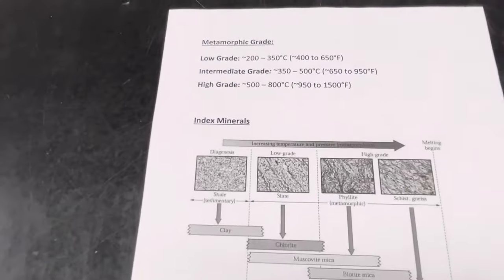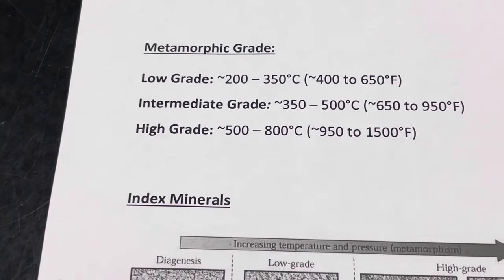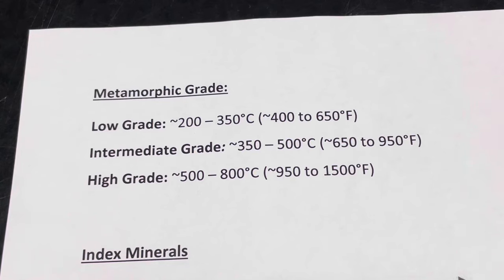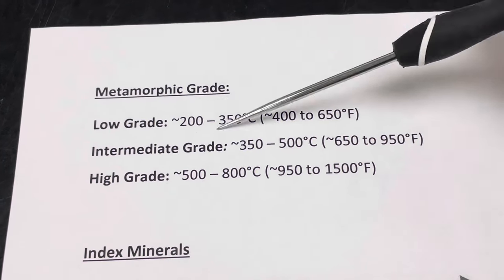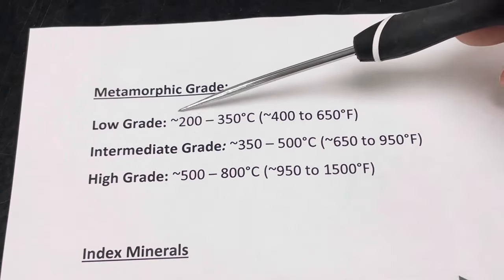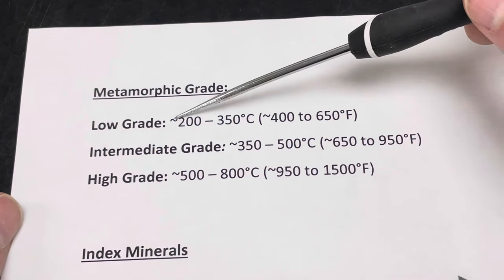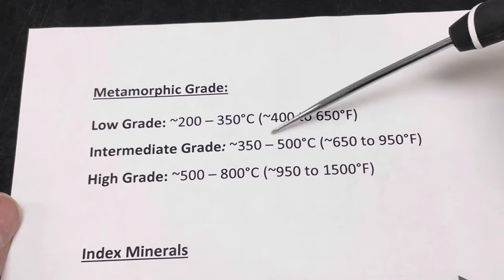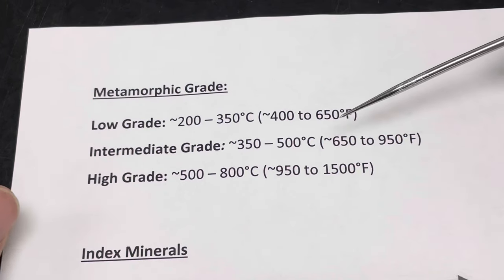So our last bit of info here is a broad classification of metamorphic grade. We sometimes, out of convenience, refer to the temperatures the rock was subjected to by using either low, intermediate, or high-grade metamorphism. These numbers are just a pretty good approximation of the temperatures involved.